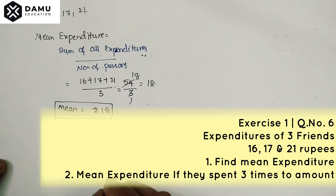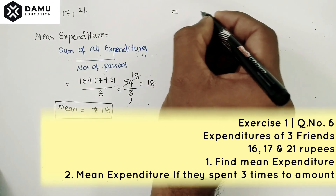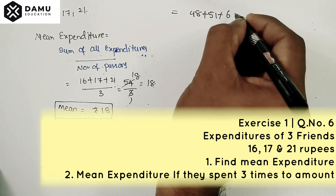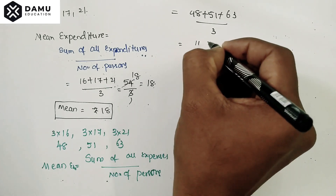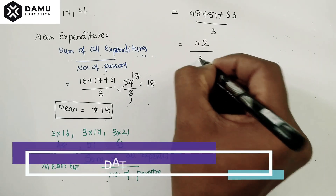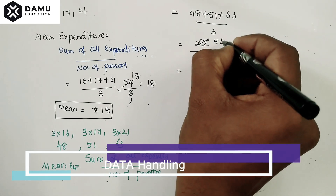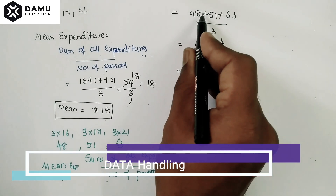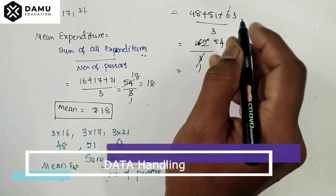Mean expenditure is equal to the sum of all expenses divided by the number of persons. So that is 48 plus 51 plus 63 divided by 3. The sum is 162, and 162 divided by 3 gives 54. So the mean expenditure is now 54 rupees.